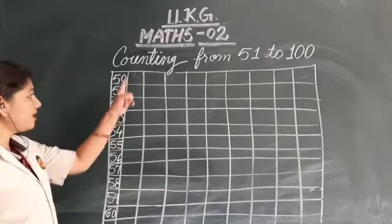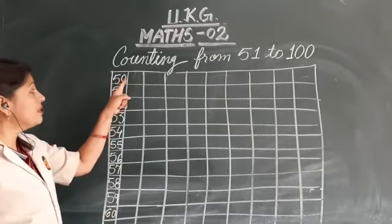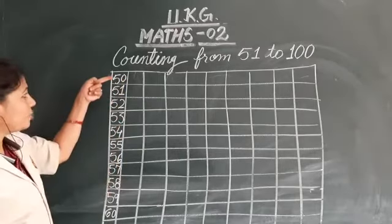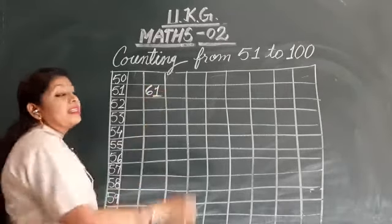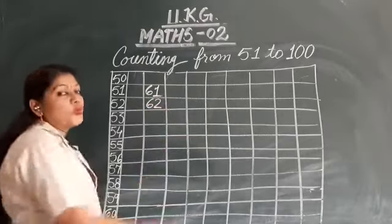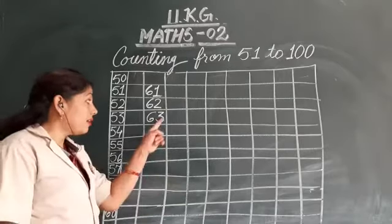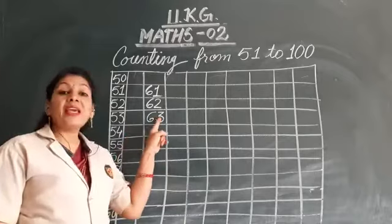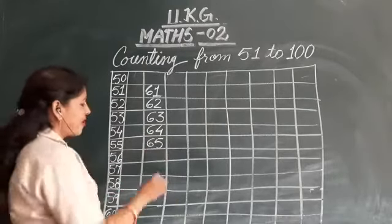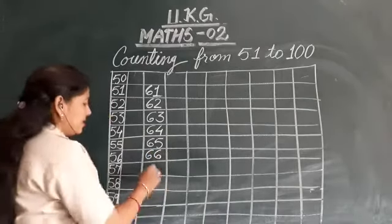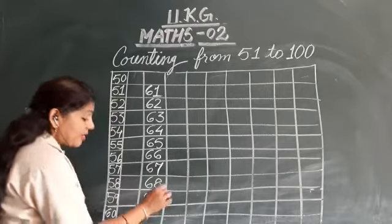Then again we will leave one line and 60. 60 ke baad kya number aheba? Jaise 50, 50 ke baad. Now next line. Then we will write 61, 62, 63. 64. 65. 66. 67. 68. 69.